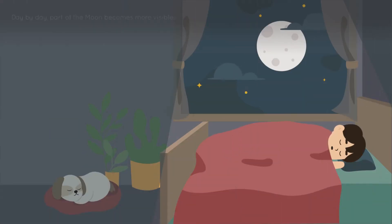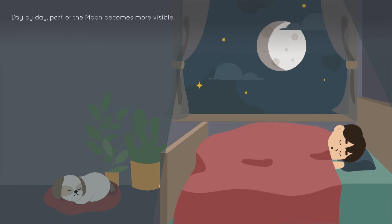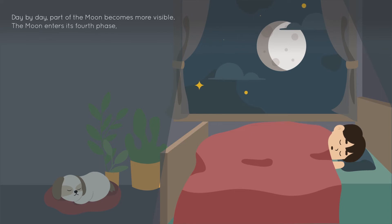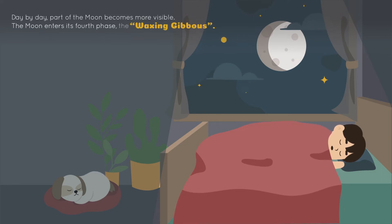Day by day, part of the moon becomes more visible. The moon enters its fourth phase, the waxing gibbous.